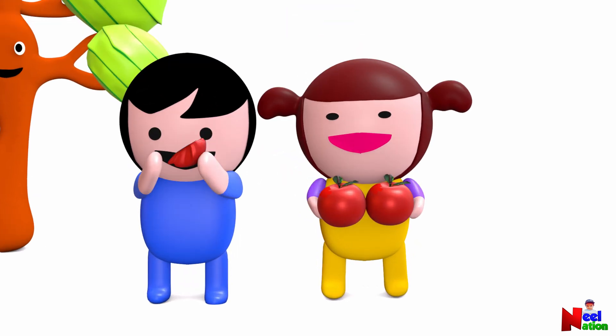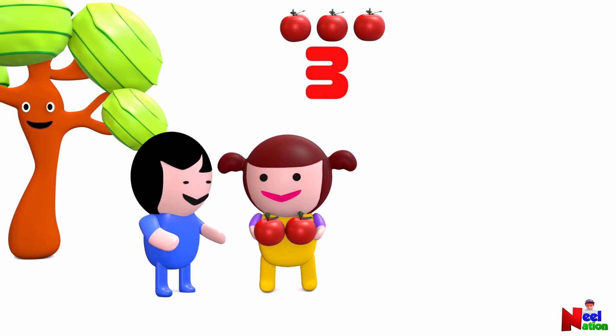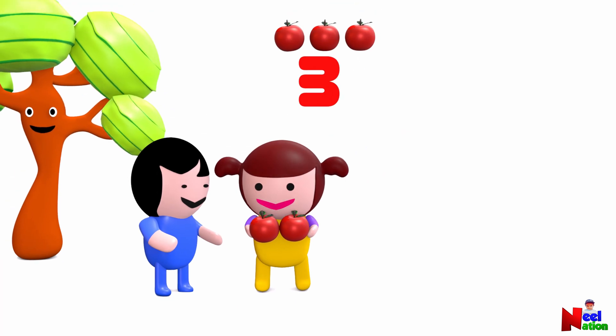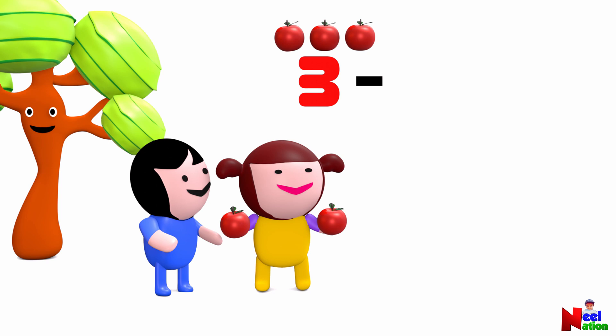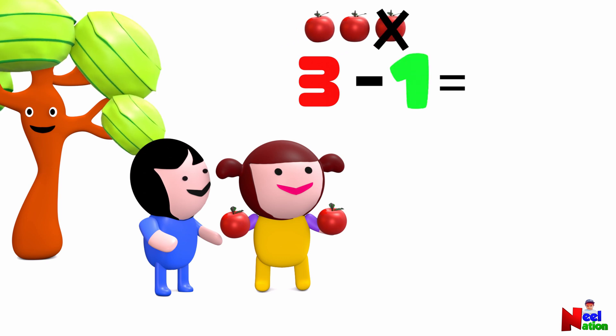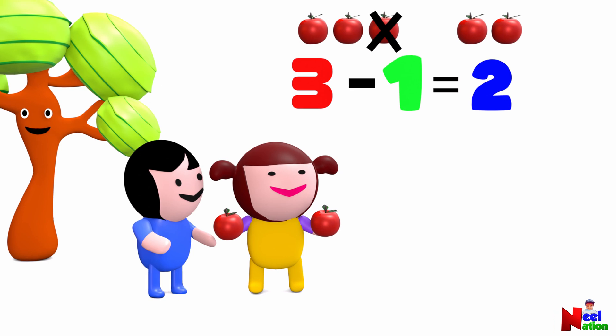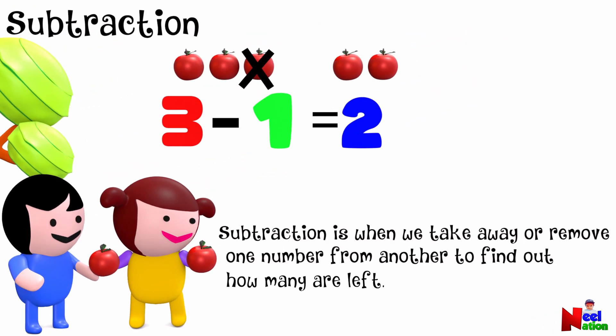Now, how many apples does Stacey have left? One, two. She has two apples left. So, when we take one away from three, we are left with two. This is called subtraction.